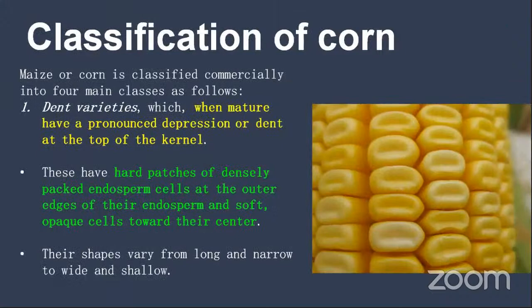Now we will talk about the classification of corn. The available corn varieties have been classified into four categories. The first one, as shown in the picture, is the dent variety. In this variety, the upper portion of the grain is visible and there is a dimple or depression in the upper surface of the grain — a kind of dent. These kinds of varieties are known as dent varieties.